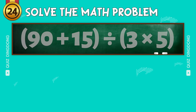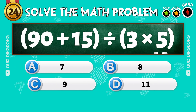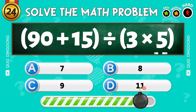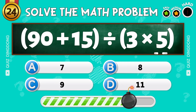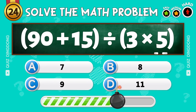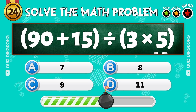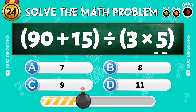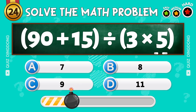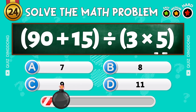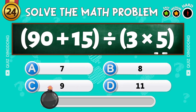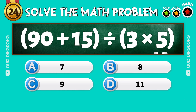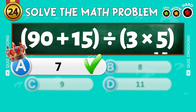What's next? Solve this! What's 90 plus 15 divided by 3 times 5? Exactly! That's 7!